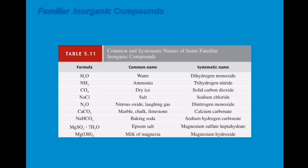Ammonia NH3 has the systematic name trihydrogen nitride. Dry ice is CO2, or solid carbon dioxide. Salt is NaCl, with the systematic name sodium chloride. N2O is known as nitrous oxide or laughing gas. CaCO3 is known as marble, chalk, or limestone, also called calcium carbonate. NaHCO3 is baking soda or sodium hydrogen carbonate. MgSO4·7H2O is epsom salt, also known as magnesium sulfate heptahydrate.